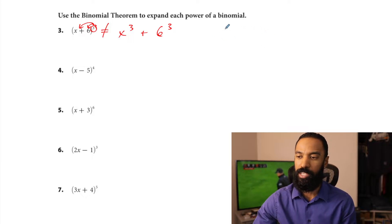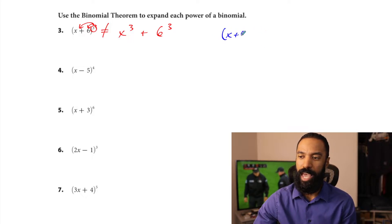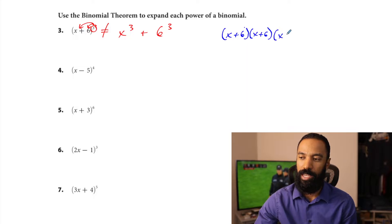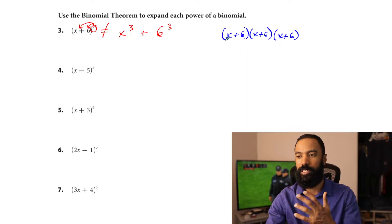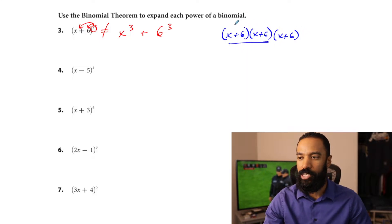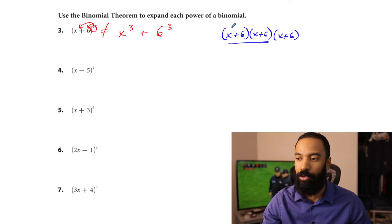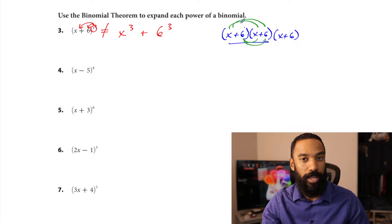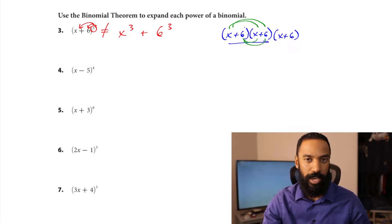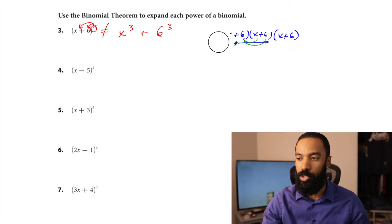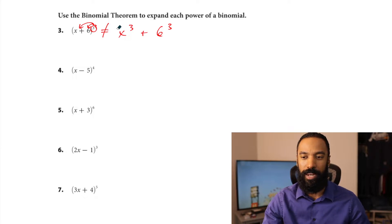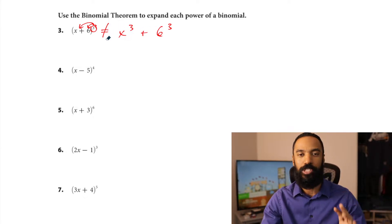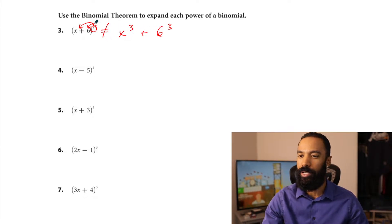x plus 6 cubed is x plus 6 times x plus 6 times x plus 6. You have to take two at a time and foil that out, and then take whatever that result is and multiply it into the x plus 6. It takes some time to do that one bit at a time, and it's not as short. There is an in-between though, and I want to help you with it.